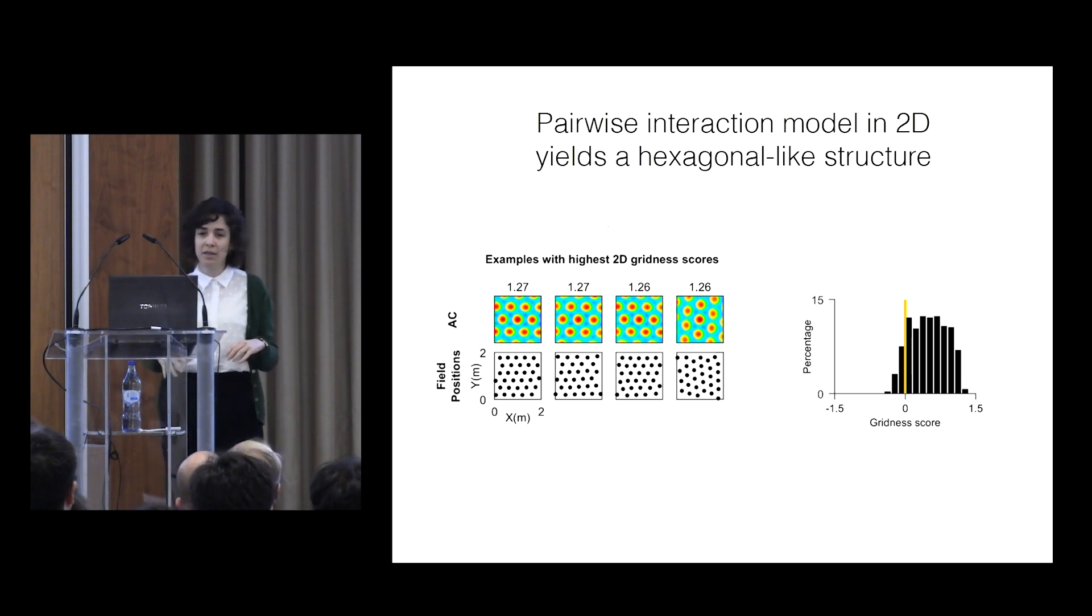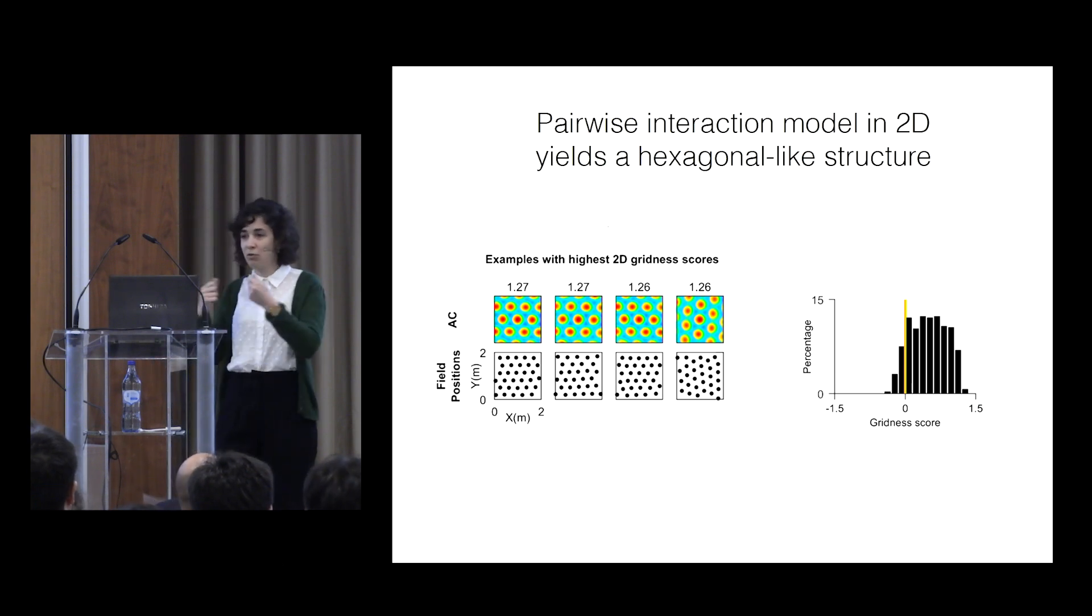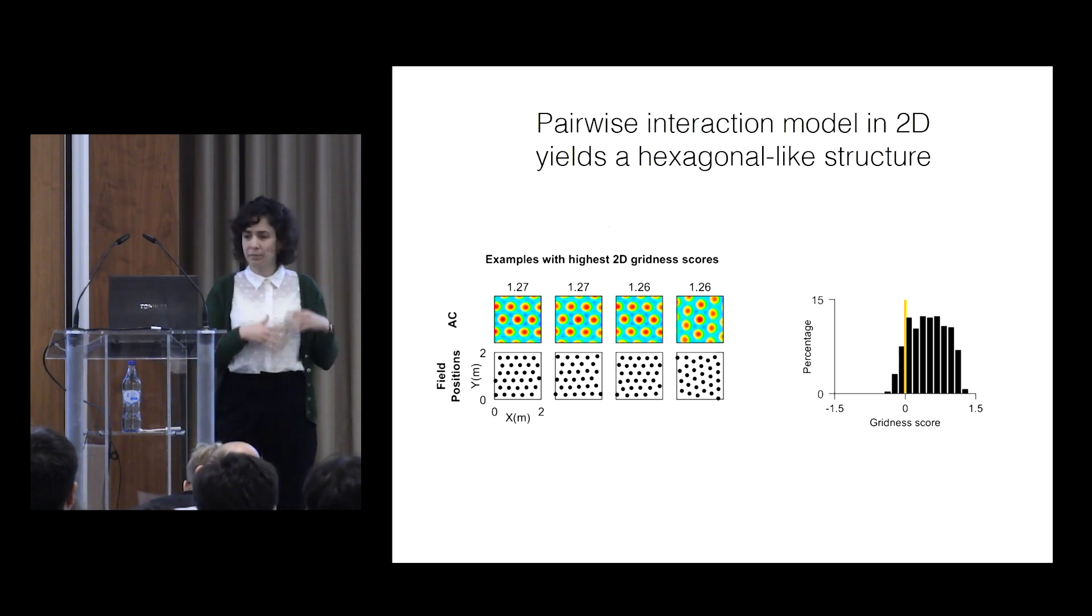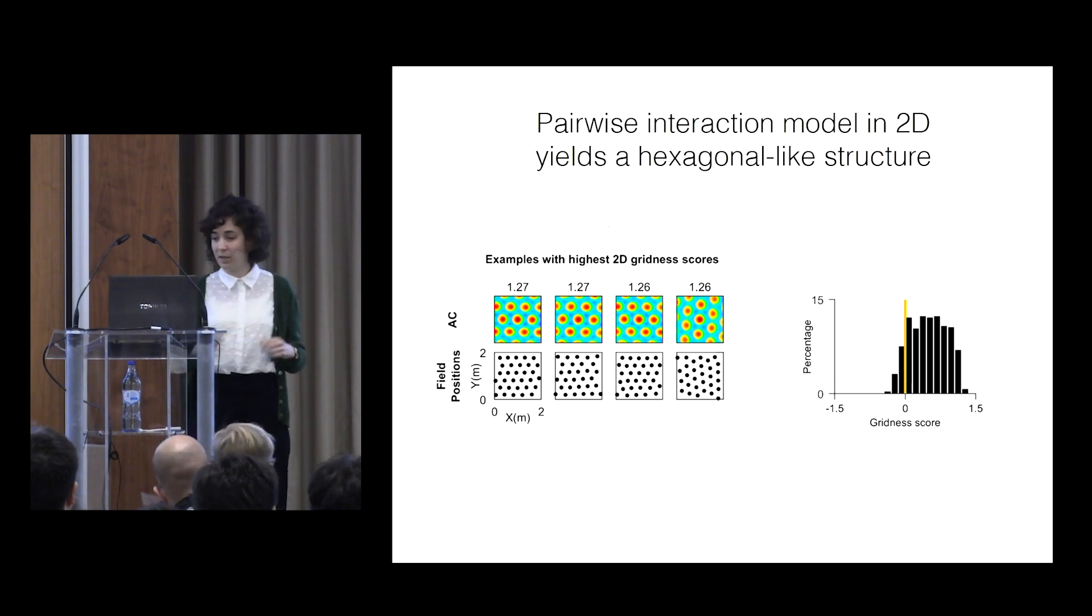So many times the simulations come out, in fact, hexagonal. So we have here a model that using the same model in the same parameter regime gives us in 3D something that fits our data, a narrow distribution of distances, local but no global order, and in 2D brings out something globally ordered, many times hexagonal.